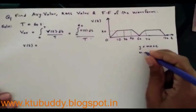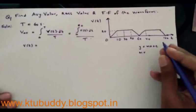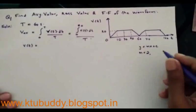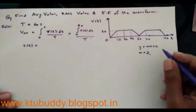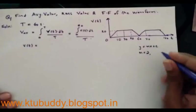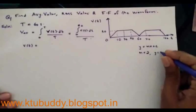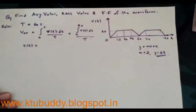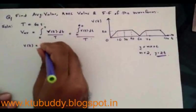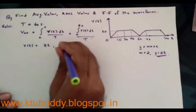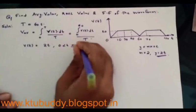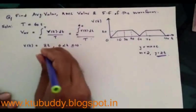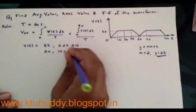The slope m is given by (y2 − y1) / (x2 − x1). Here the slope equals (20 − 0) / (10 − 0) = 2. Therefore, v(t) from 0 to 10 is 2t, for 0 < t ≤ 10. From 10 to 30, the value of the waveform is 20 itself, so v(t) = 20 for 10 < t ≤ 30.